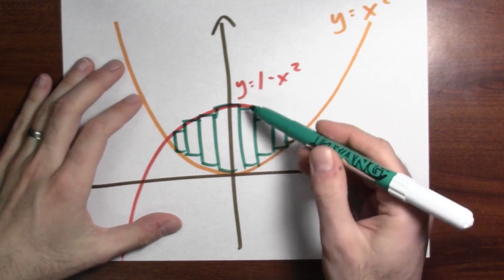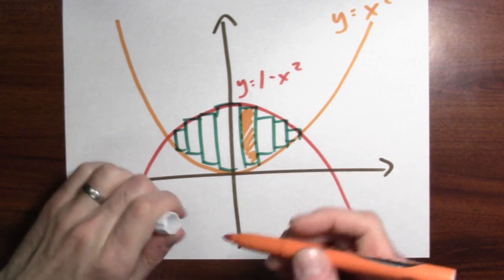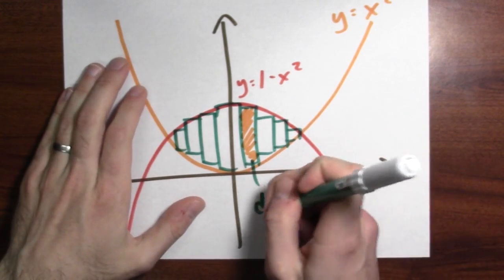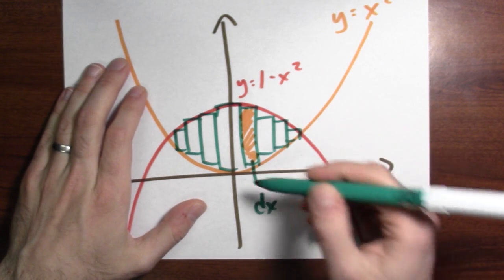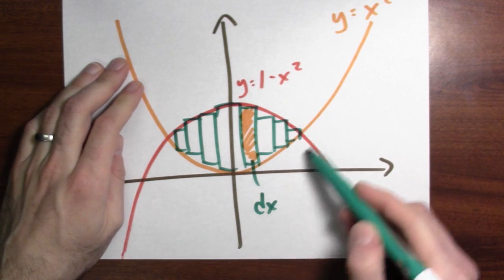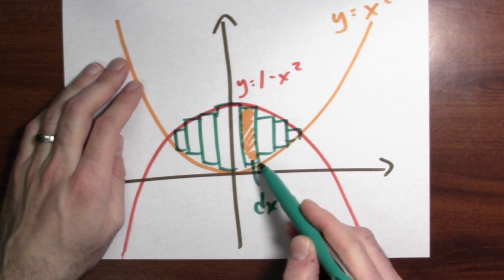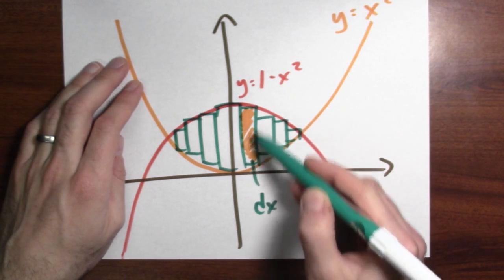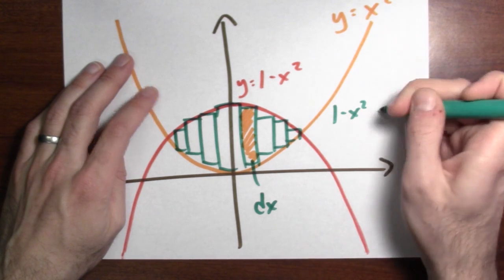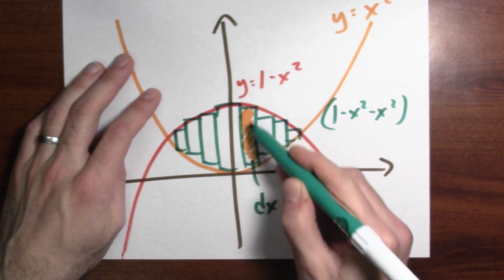Now I can write down the heights and the widths of one of those rectangles. Let's take a look at this rectangle here. What's the width of that rectangle? It'll be real thin, so I'll call the width dx. What's the height? Well, the top of that rectangle is on the curve 1 minus x squared, and the bottom of that rectangle is on the curve x squared. So if I take the top coordinate minus the bottom coordinate, that gives me the height: 1 minus x squared minus x squared.